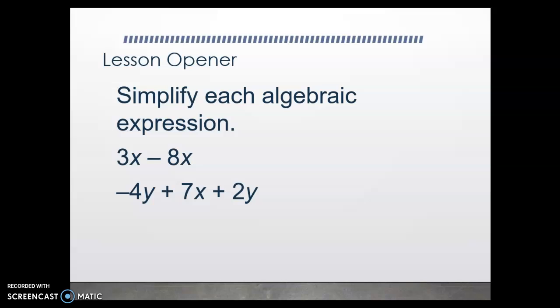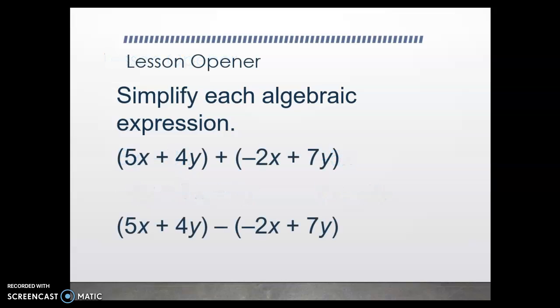Let's do a quick lesson opener just to make sure you remember some things about combining like terms. Go ahead and simplify each algebraic expression below. So 3x minus 5x — we can combine those because they are like terms, and when we combine them we get negative 5x. Negative 4y plus 7x plus 2y — we've got to identify our like terms: negative 4y plus 2y, and when we combine our like terms that simplifies to 7x minus 2y. So don't forget about combining like terms.